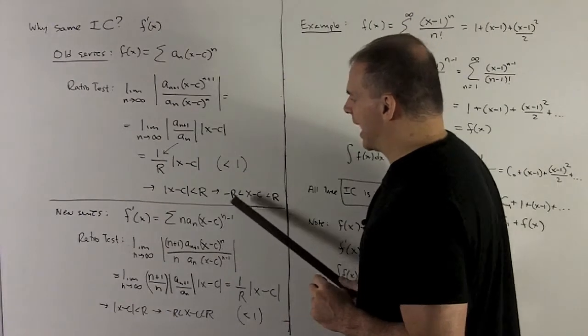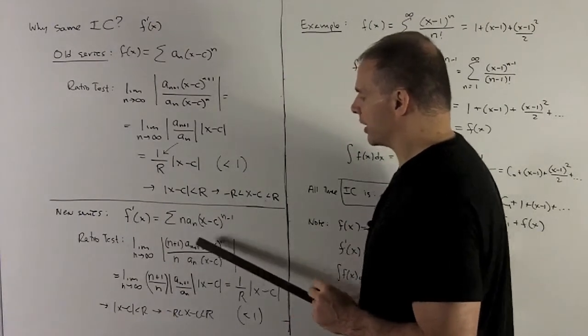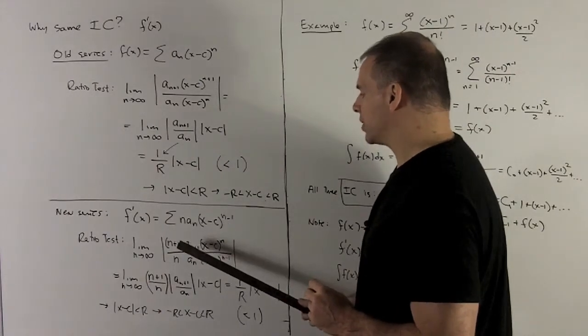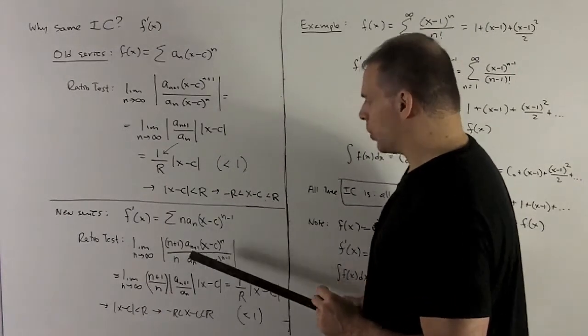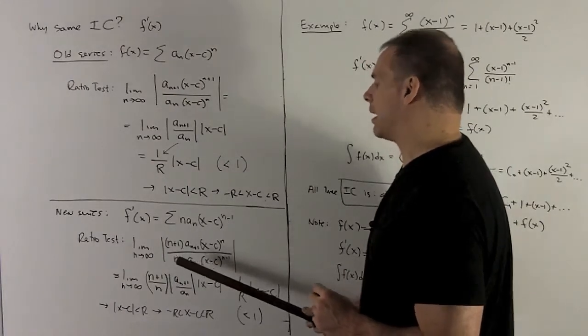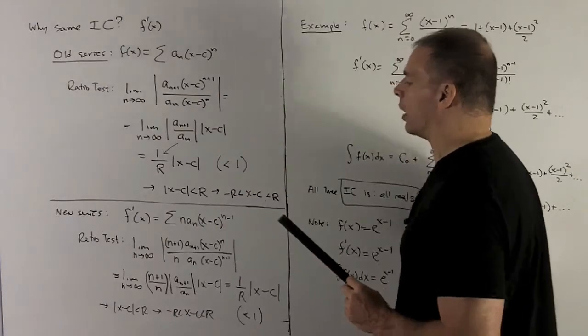So I take the limit of, we're going to put wherever I see an n here, I put an n+1, so that gives me the top. Then we divide by what I have here. That's going to give me (n+1)a_{n+1}(x-c)^n, and then on the bottom I have na_n(x-c)^{n-1}.